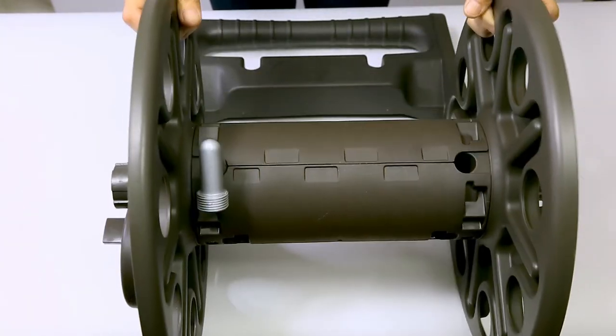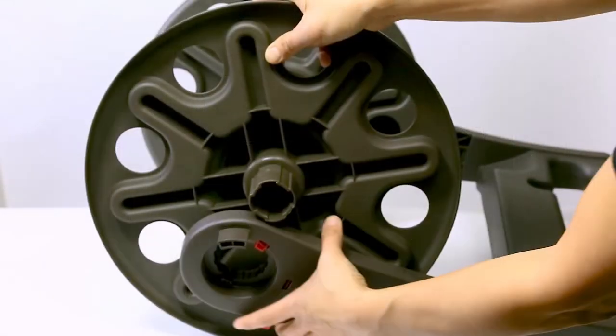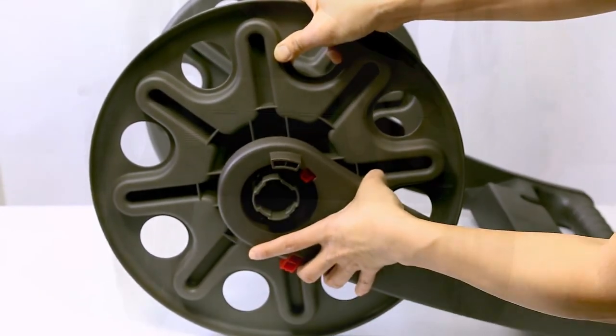Next, connect the reel assembly to the upper frame and swing arms. Flex the swing arms outward and slip the reel assembly into place.